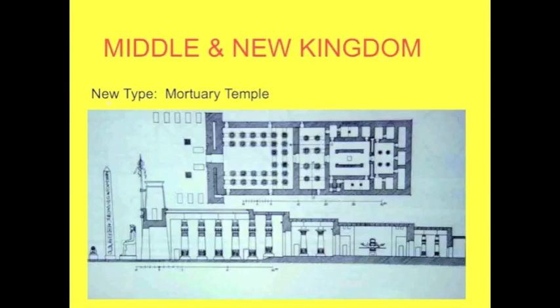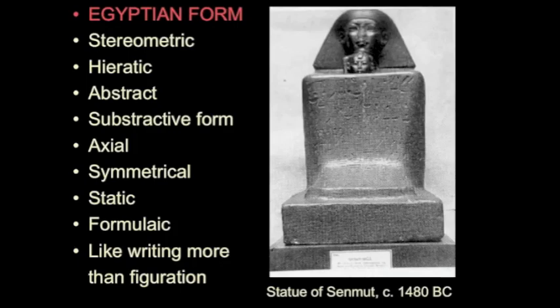Good morning. Today we are going to continue our discussion of Egyptian architecture and Egyptian art, but we are going to move forward to the Middle and New Kingdom. We're really just going to talk about the New Kingdom, because that's where the most extraordinary architectural projects come from. Before we talk about what characterizes New Kingdom architecture, let's review some things we discussed last time about Egyptian form, organizational principles, and the idea of type and typology.